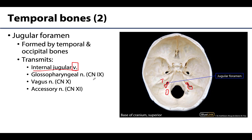Three cranial nerves also traverse the jugular foramen: the glossopharyngeal nerve (CN IX), the vagus nerve (CN X) — the wanderer, which eventually reaches all the way to the gastrointestinal system — and the accessory nerve (CN XI), sometimes called the spinal accessory nerve.